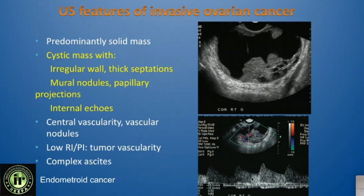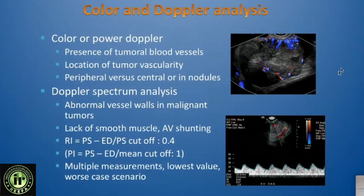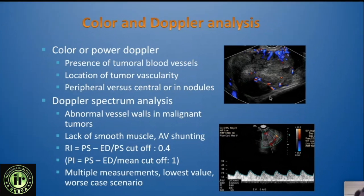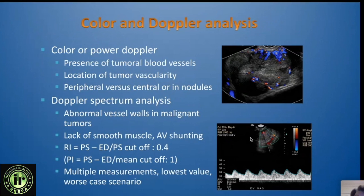You can see low resistance flow within the vascularity, and the presence of ascites is also a concerning sign. This case turned out to be an endometrioid cancer. Vascularity is important because we are trying to confirm the presence of tumor vessels, which can be peripheral or central. These abnormal vessels lack smooth muscle, tend to have AV shunting, and therefore show forward flow in diastole with a low resistance index.